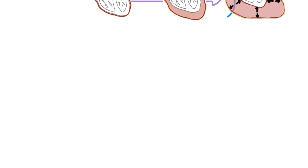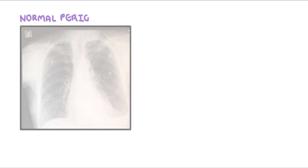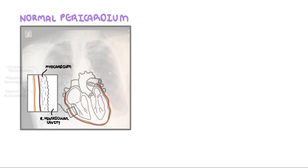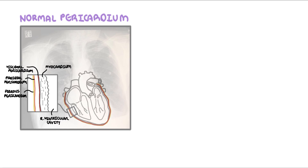Let us learn about the anatomy and function of the normal pericardium. Here is a normal chest x-ray, and here sits the heart, enveloped by the pericardium. The pericardium is made up of two main layers: a thin internal layer known as the serous pericardium, which forms the visceral and parietal pericardium, and the outer tough external layer known as the fibrous pericardium. The pericardium contains a small amount of serous fluid which allows frictionless cardiac movement. The pericardial sac can also adapt to changes in heart size as it fills, providing a protective environment for cardiac function — essentially acting as a barrier.